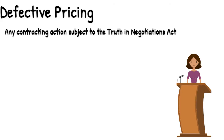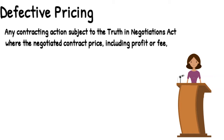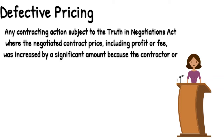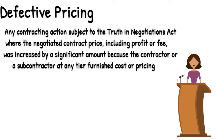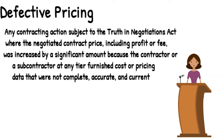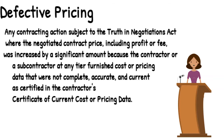Defective pricing is any contracting action, subject to the Truth in Negotiations Act, where the negotiated contract price, including profit or fee, was increased by a significant amount, because the contractor or a subcontractor, at any tier, furnished cost or pricing data that were not complete, accurate, and current, as certified in the contractor's certificate of current cost or pricing data.